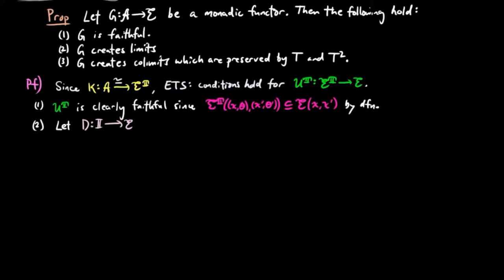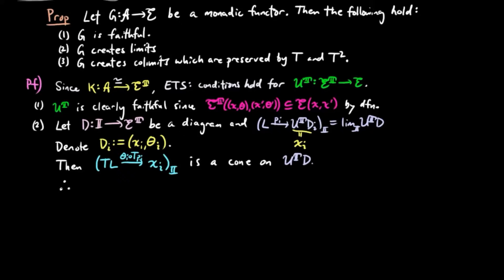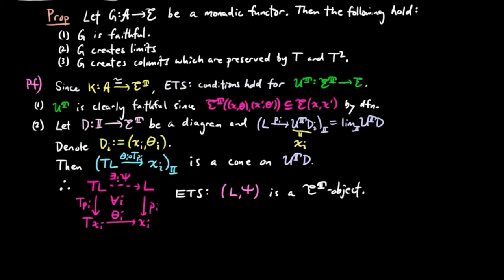For (2), we let D be a diagram in the Eilenberg-Moore category, and let the cone PI be the limit of UTD. To simplify notation, we denote DI by the Eilenberg-Moore object (Xi, thetaI). The limiting cone then has codomain Xi for each I. Since thetaI composed with TPI is a cone on UTD, by the universal mapping property of L, there exists a unique E-morphism Xi such that the following square commutes for each I. It is then enough to show that (L, Xi) is an Eilenberg-Moore object, because the projections will automatically be Eilenberg-Moore morphisms since the purple square commutes for each I, and the universal property for (L, Xi) will follow from the universal property of L.